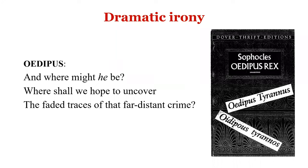Oedipus is told to bring the murderer to justice. He says, 'Where shall we hope to uncover the faded traces of that far-distant crime?' — referring to the murder of King Laius. The irony is that Oedipus declares he will put the perpetrator behind bars, not aware that he himself was the killer. But the audience knows that Oedipus killed his own father. This is dramatic irony: the audience knows the situation better than the character himself.